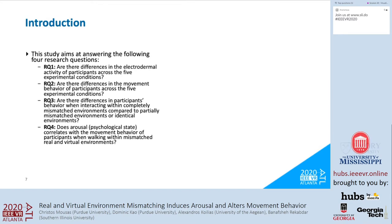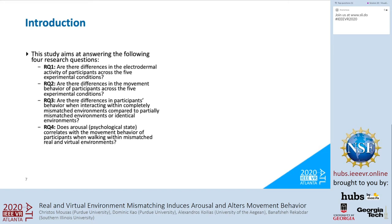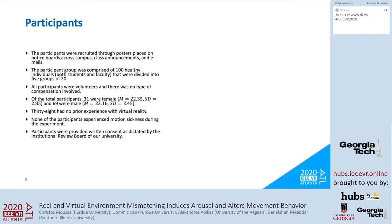This study aims at answering four research questions: Are there differences in the electrodermal activity of participants across the five experimental conditions? Are there differences in the movement behavior of participants across the five experimental conditions? Are there differences in participants' behavior when interacting with completely mismatched environments compared to partially mismatched or identical environments? Does arousal correlate with the moving behavior of participants when working with mismatched real and virtual environments? For this study, 100 healthy individuals were recruited from a university setting.